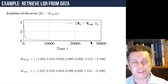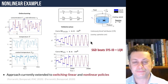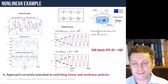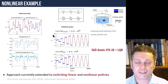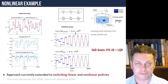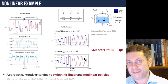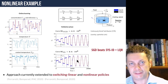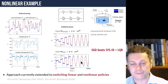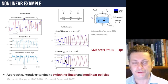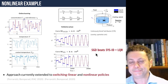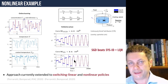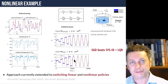On a continuously stirred tank reactor — a nonlinear system — SGD trains a linear controller achieving good tracking over a large output range. Comparing with the standard model-based approach of first fitting a linear model then designing an LQR controller, the model-based result actually performs worse. The intuition is that system identification optimizes output prediction fit, not closed-loop performance, whereas the SGD approach directly optimizes performance.